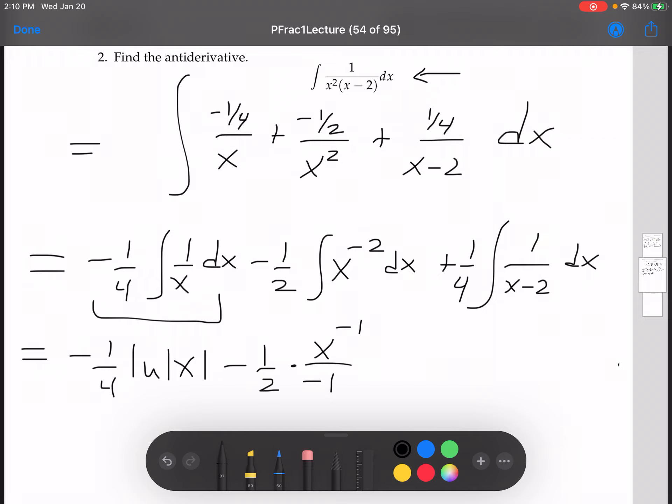And for this one here, you could use a u substitution u equals x minus 2 to get 1 fourth times 1 over 1, ln absolute value of x minus 2 plus C.